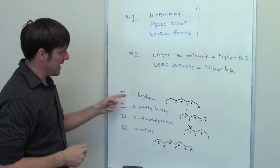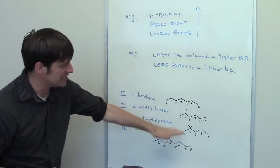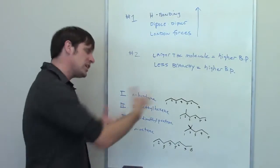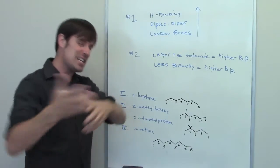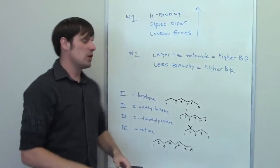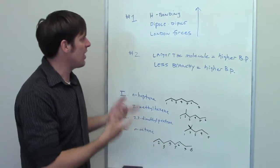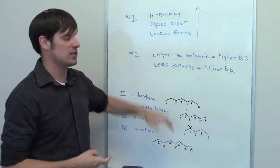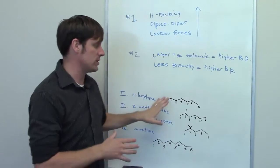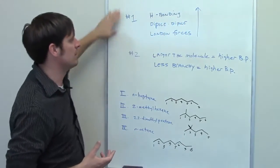I've been given N-heptane, 2-methylhexane, 2,2-dimethylpentane, and N-octane. I've drawn all of their skeleton structures so that you can see them. As we look at all these, you'll notice there are just carbons and hydrogens — these are all hydrocarbons, which means that all they have is London forces. Because none of them have anything stronger than London forces, I cannot sort them by boiling point according to rule number one. I'm going to have to move down to rule number two.